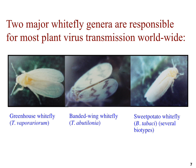Two major whitefly genera are responsible for most plant virus transmission throughout the world. Bemisia tabaci is globally distributed in tropical and subtropical areas, and in greenhouse facilities in some temperate areas. The greenhouse whitefly, Trialeurodes vaporariorum, is common in warmer temperate regions or subtropical regions during cooler seasons as well as greenhouses. The banded-winged whitefly, Trialeurodes abutilonea, is another important but less well-known vector, present in the central and southern United States as well as periodically in the desert southwest. The type of whitefly will influence what can be transmitted.